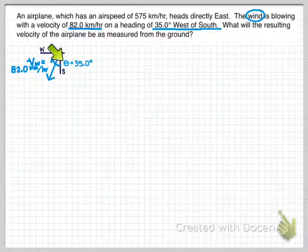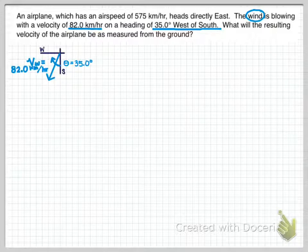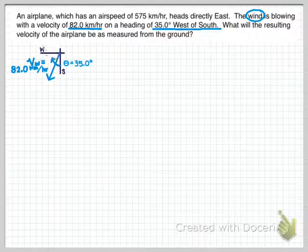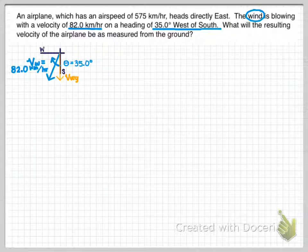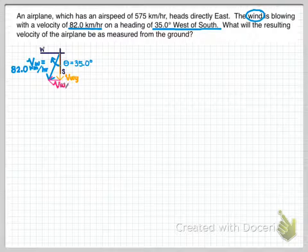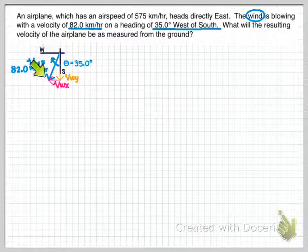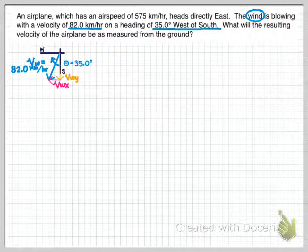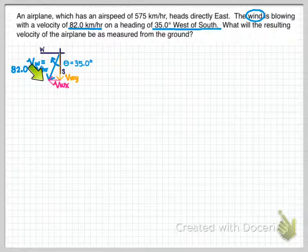I need to break this into its components — the vertical and horizontal components — and then use those to solve the problem. I'm going to break it into the vertical component, which I'll call the velocity of the wind in the y-direction, and the horizontal component, the velocity of the wind in the x-direction. Remember, they need to be added tip to tail at a right angle. You can go down and over to the left, or take the shortcut straight down and to the left — either way they start and end at the same spot.